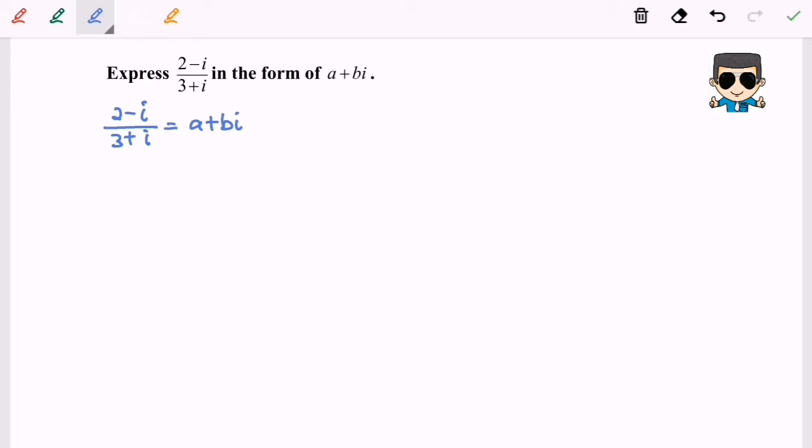So now first thing is why we have to rationalize the denominator. 3 plus i is a complex number. So if you compare both sides, for the right hand side, the denominator is actually a plus bi over 1.